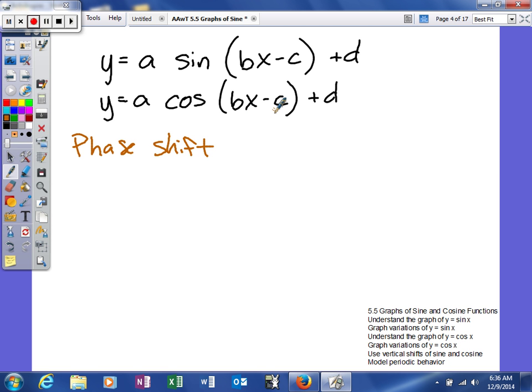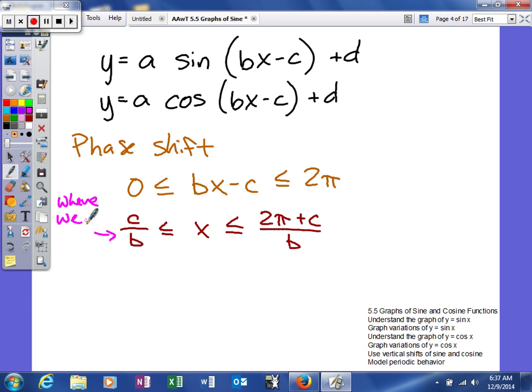So we find our phase shift. What we're actually doing is we're going to solve this inequality right here. And what we're going to do is we're going to solve for x. So when you solve for x, we would add c and then divide by b. So it's going to be c divided by b is less than or equal to x, which is less than or equal to 2 pi plus c, divide it all by b. So once we set up our inequality, we'll solve it. And what this information tells us is this is where we start our graph.